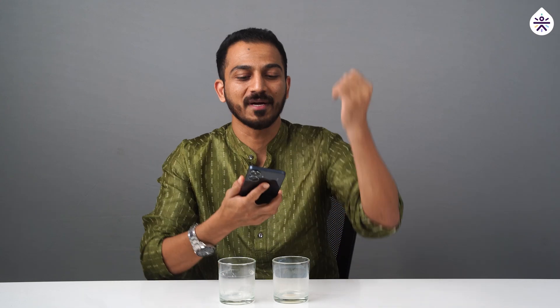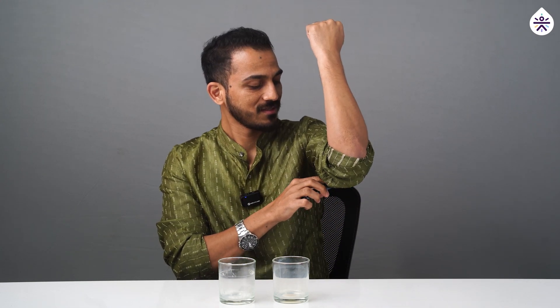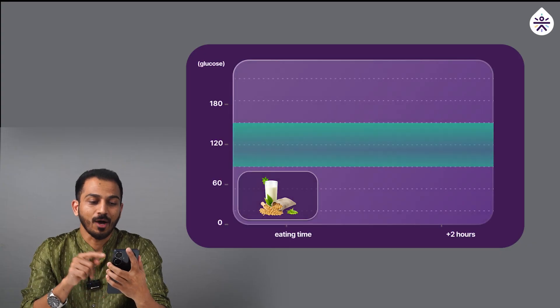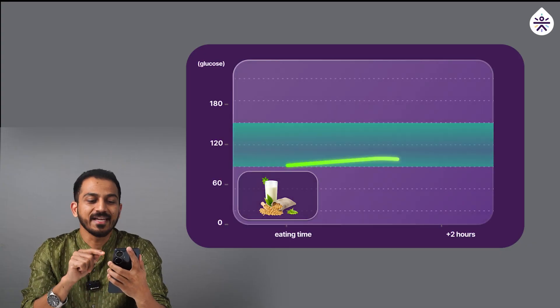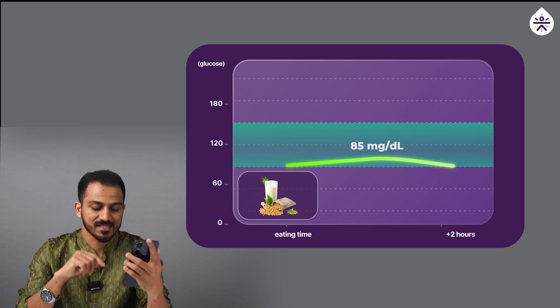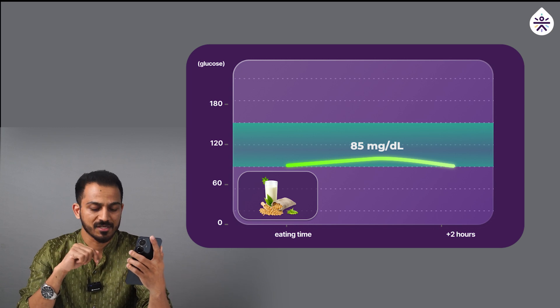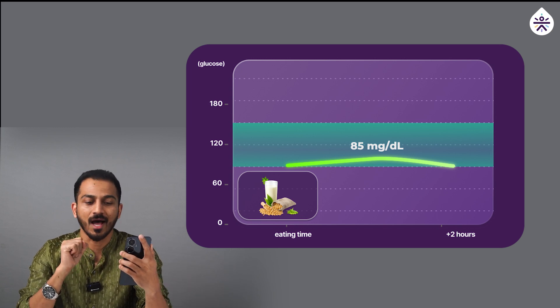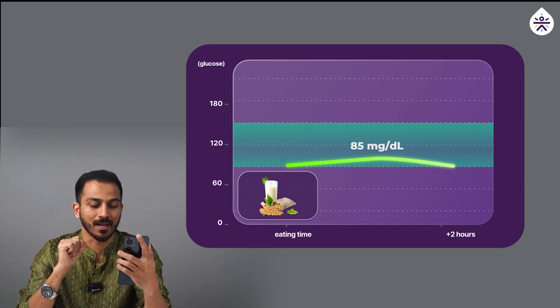Time to measure my sugar. Cool, so now it shows 85 mg per dl, which means a 5 mg per dl increase after having unsweetened soy milk.